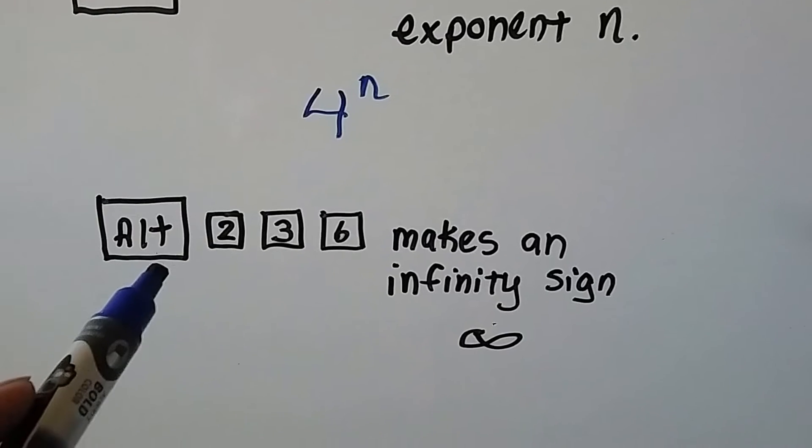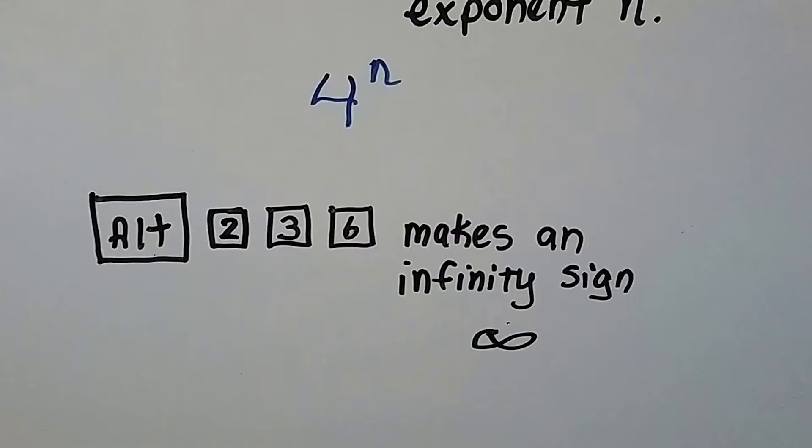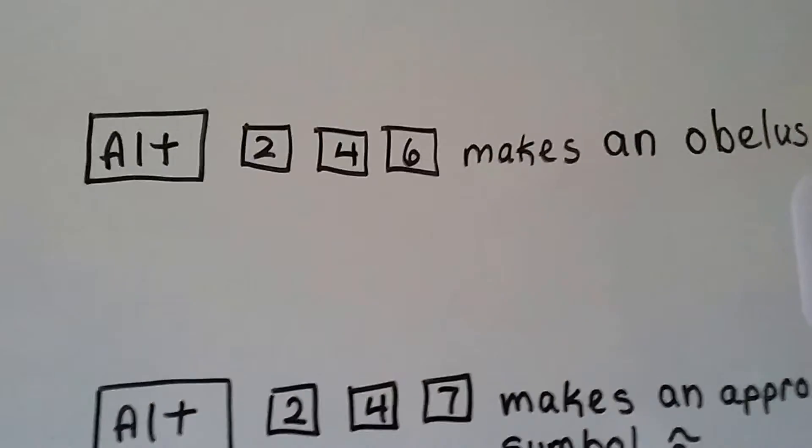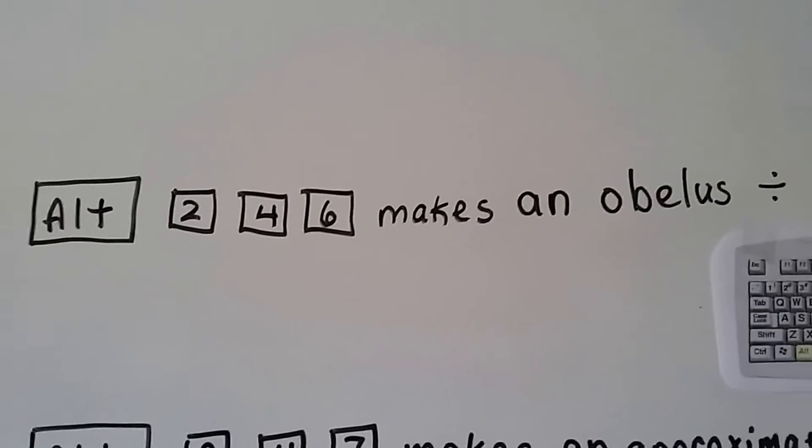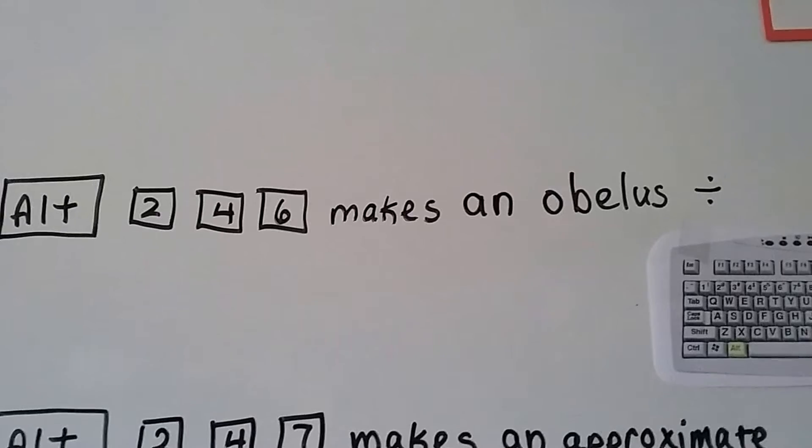If you hold down the ALT key while pressing 236, it'll make an infinity sign. And if you hold down the ALT key while pressing 246, it'll make a division sign, an obelisk.